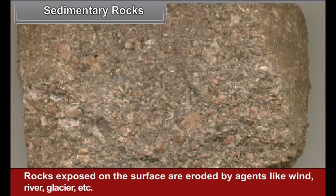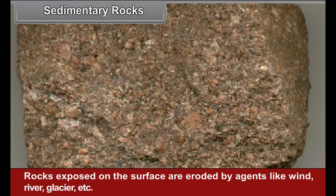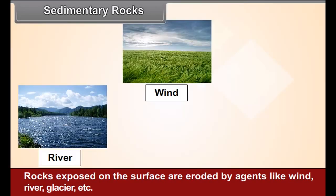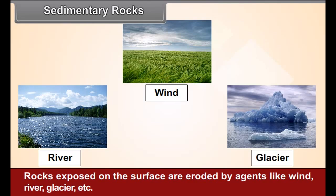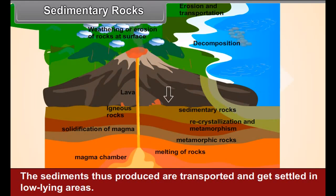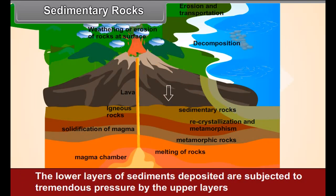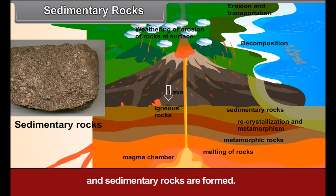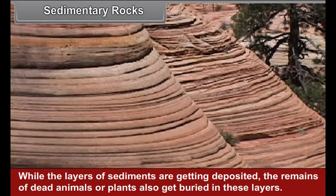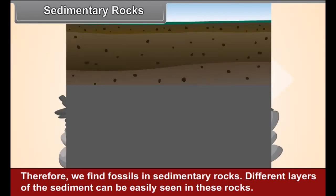Sedimentary rocks: rocks exposed on the surface are eroded by agents like wind, river, glacier, etc. The sediments thus produced are transported and get settled in low-lying areas. The lower layers of sediments deposited are subjected to tremendous pressure by the upper layers and sedimentary rocks are formed. While the layers of sediments are getting deposited, the remains of dead animals or plants also get buried in these layers. Therefore, we find fossils in sedimentary rocks.